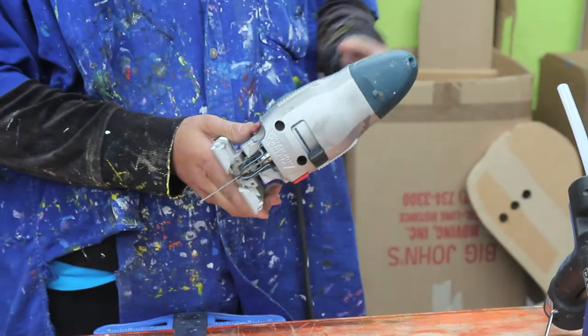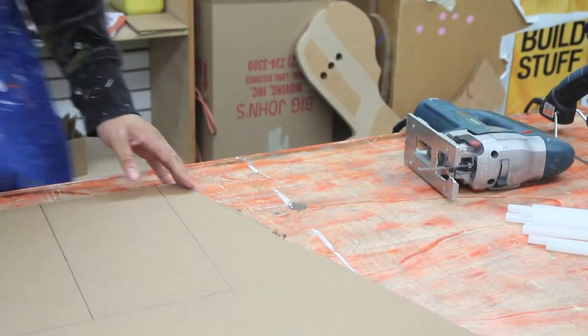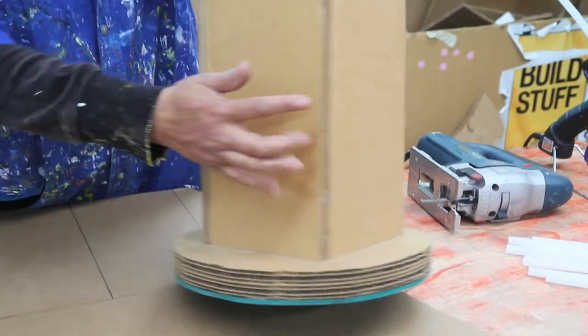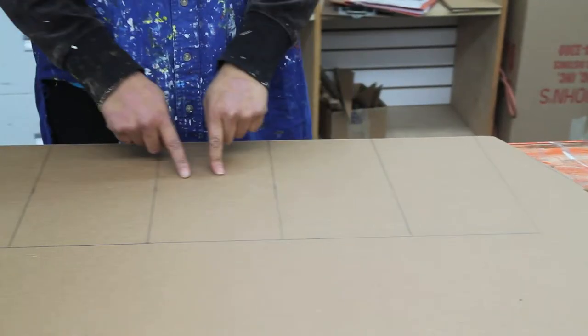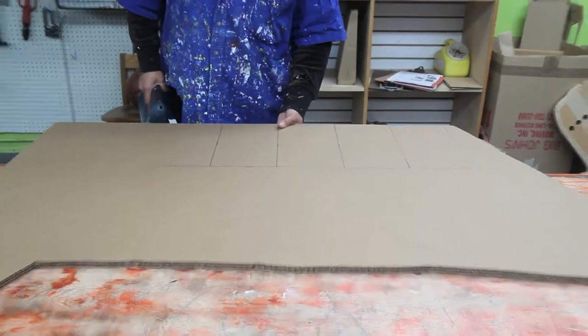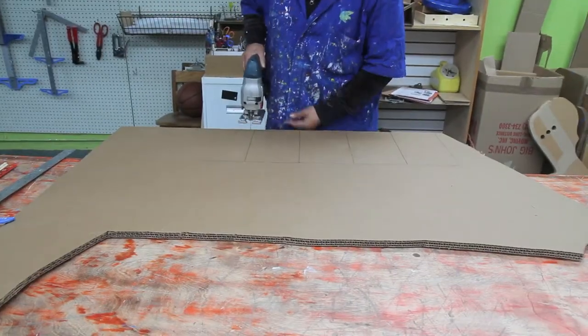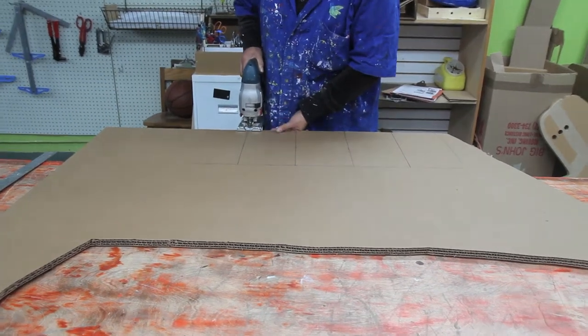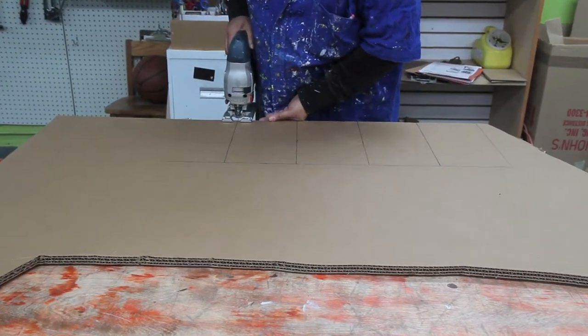Right now I'm going to use the jigsaw to cut the pieces. So remember, the walls are four walls. One, two, three, and four. So now I'm going to use the jigsaw to cut my pieces off. Just make sure that the plate is sitting on the cardboard. Turn on your jigsaw.